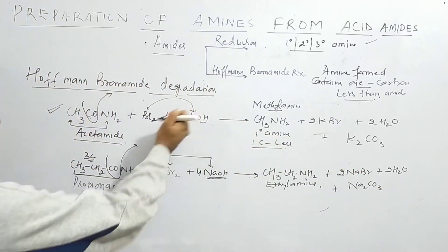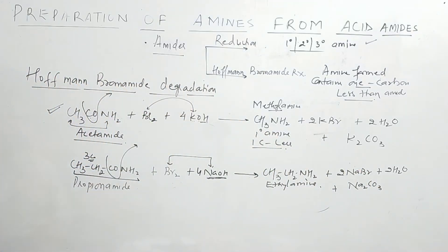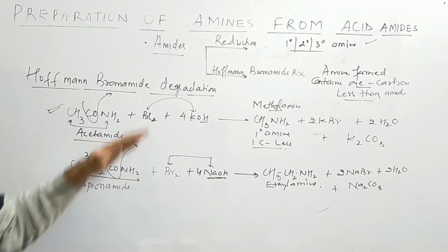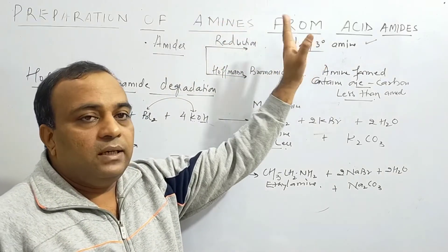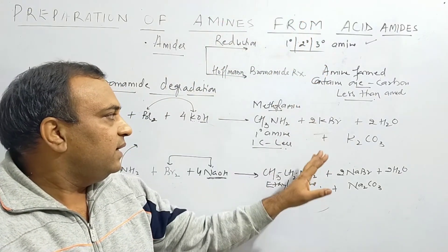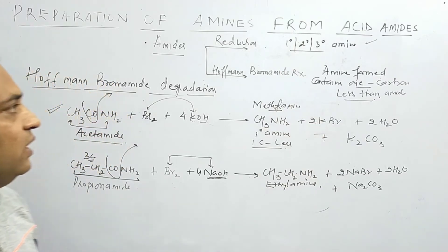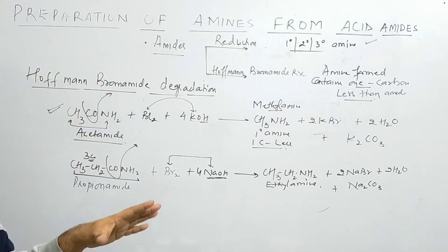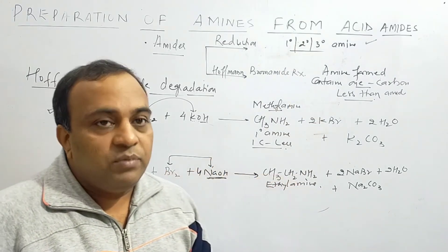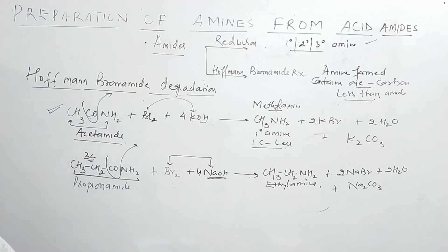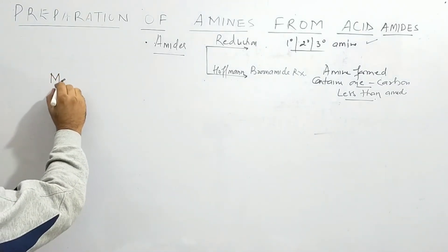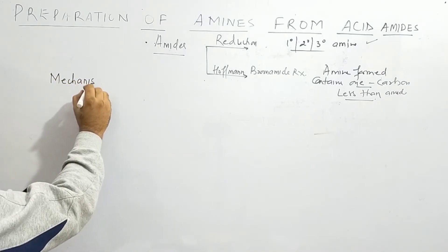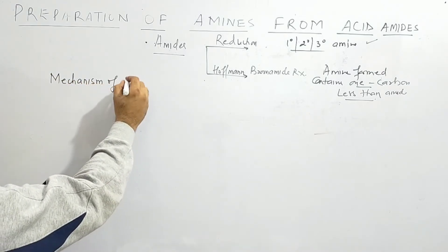So we have done the Hoffman Bromamide degradation. To compare: in reduction we can get primary, secondary, and tertiary amine; in Hoffman Bromamide reaction we get only primary amine, and the most important feature is the amine has one carbon atom less than the amide.